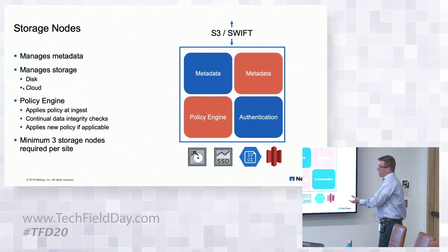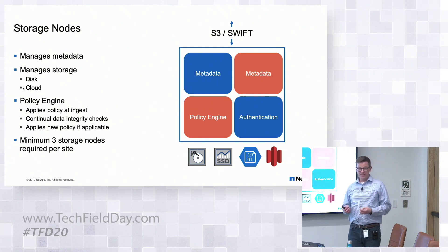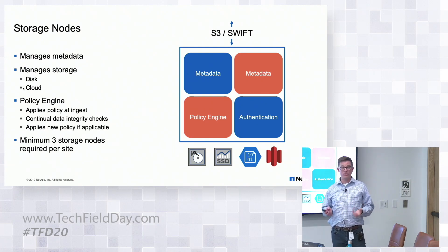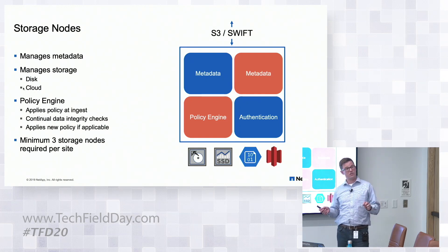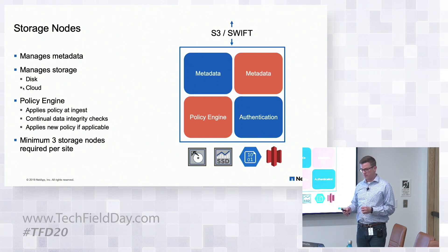You can retrieve objects by S3 for file-object duality. The storage nodes are the heavy lifters of the grid — they literally do everything. In fact, you can turn the admin nodes off and Storage Grid will keep running just fine, as long as you don't want to make any changes to the system. You don't need the admin nodes. They're completely out of the data path.